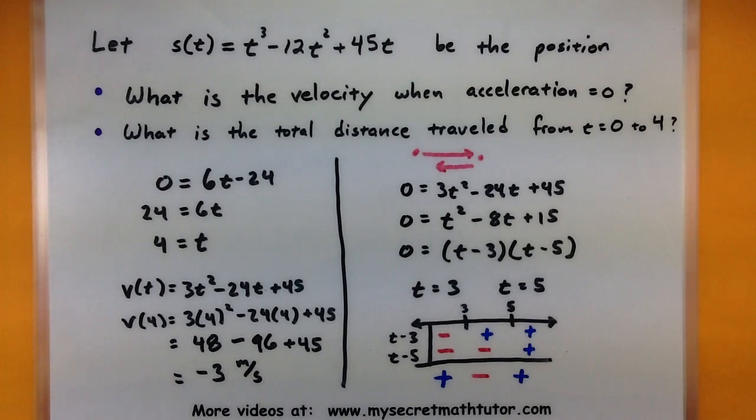First we'll figure out how far did it travel from 0 to 3, grab some sort of distance from there, and then we'll take a look at how far it traveled from 3 to 4. We'll look at both of those.